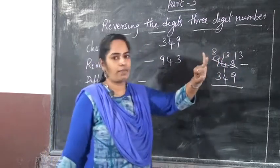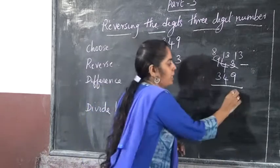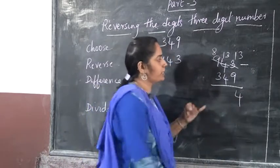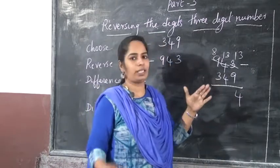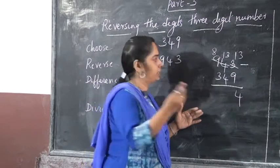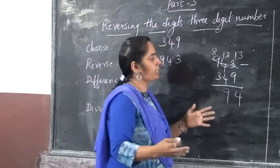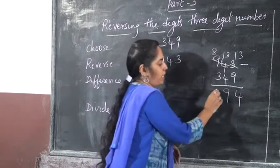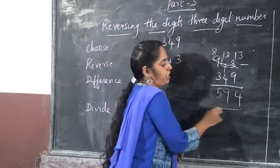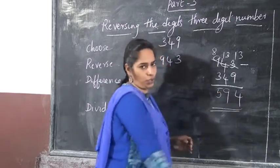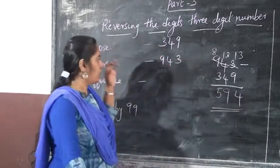So this becomes 13, and 3 becomes again 13 here, and here it becomes 8. Counting: 9, 10, 11, 12, 13, and 4, 5, 6, 7, 8, 9, 10, 11, 12, 13. It is 9 and 8 minus 3, it is again 5. So 594 you will get.